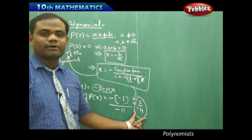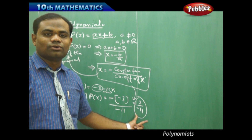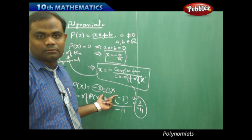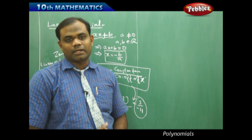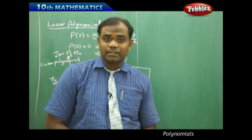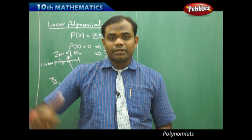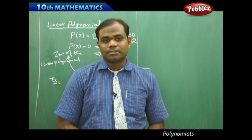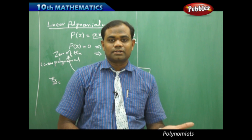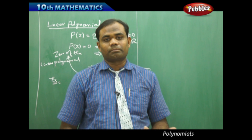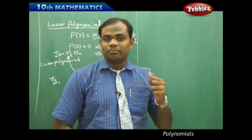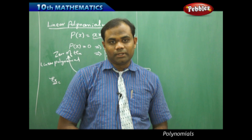That gives us 3 over negative 11, which is nothing but negative 3 over 11. This is identified as the zero of the given linear polynomial. Now, understanding the linear polynomial in a geometrical concept is very important, because balancing the algebraic approach with the graphical approach is very important in the topic of polynomials.